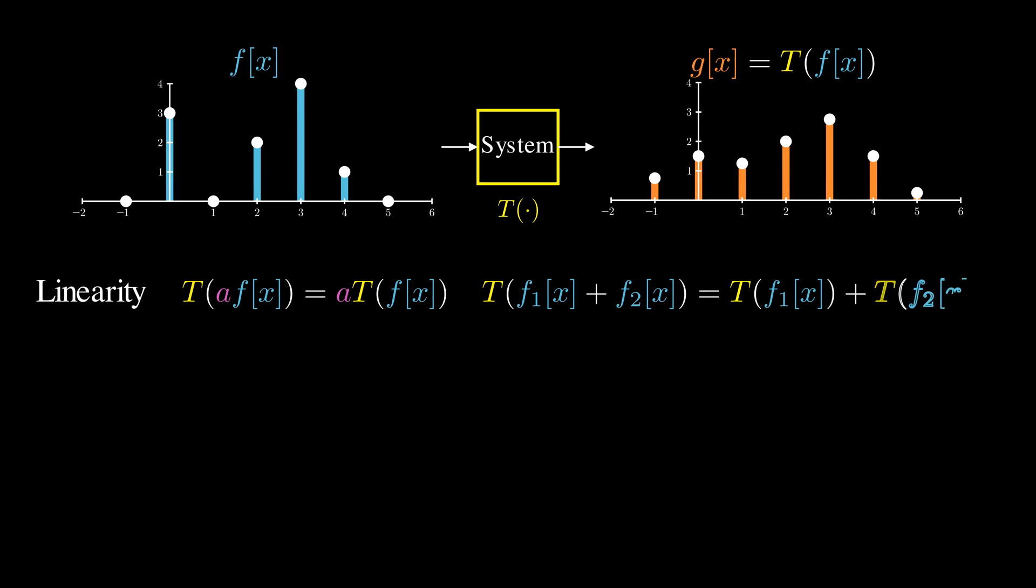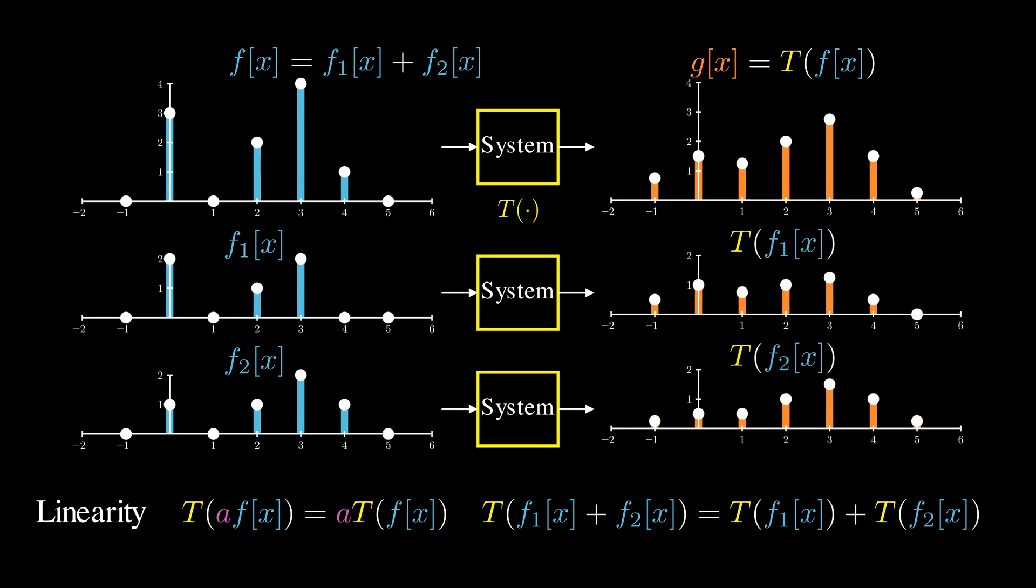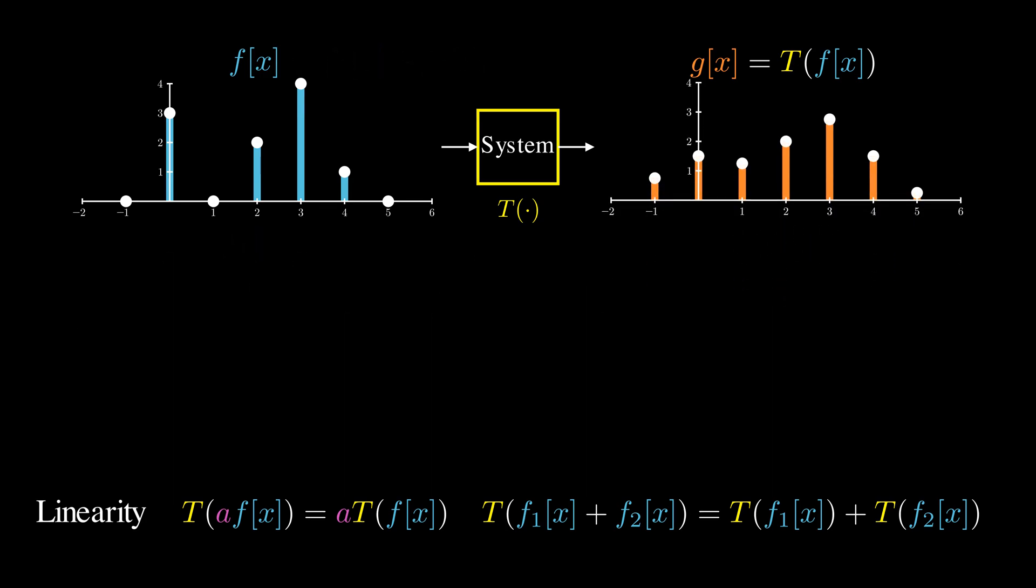Also, if we split this input signal into two parts, f1 and f2, process them with our system separately, and sum the results, the output remains the same as if we process f directly.